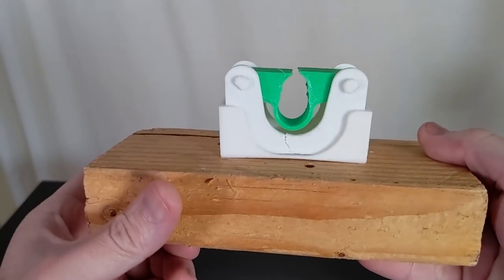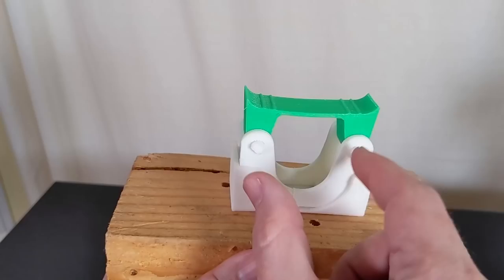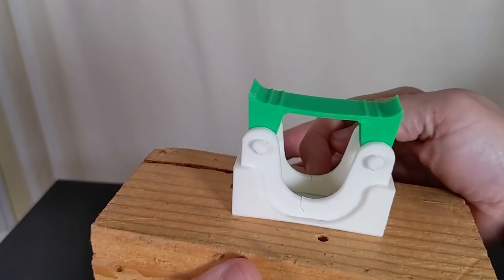Also the reason that this one's mounted to a 2x4 here is because you can see that it cracked. It's gripping the broom handle with so much force that it literally broke here at the bottom.